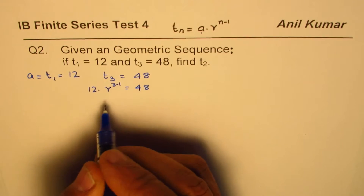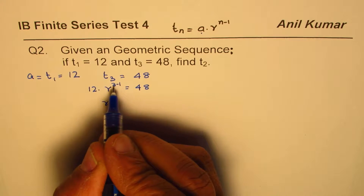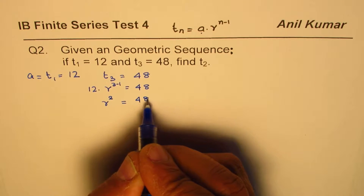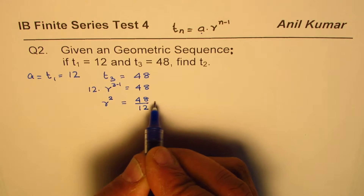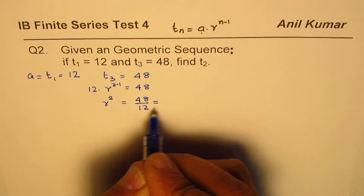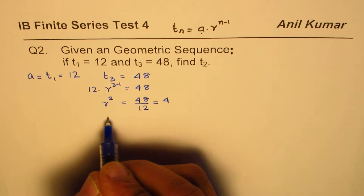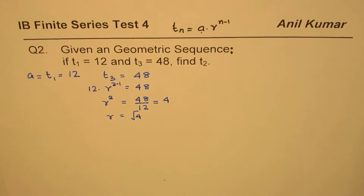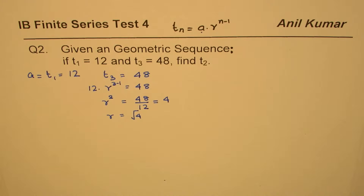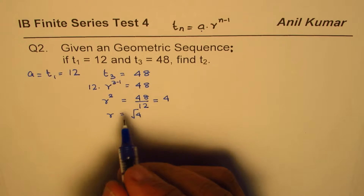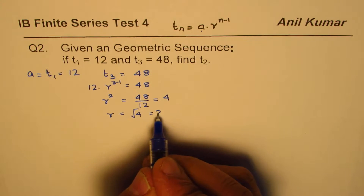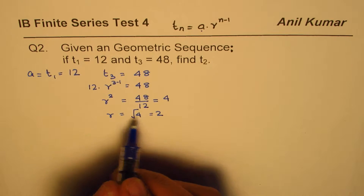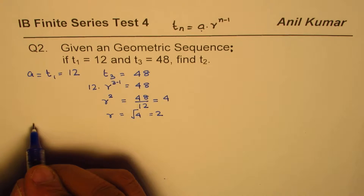So r squared equals 48 divided by 12, which is 4. Therefore r is the square root of 4. In series we are talking about natural numbers, so we take the positive value: r equals 2.